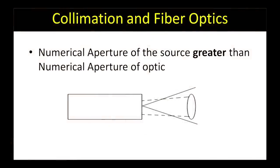If the numerical aperture of the source is greater than the numerical aperture of the optic, the optic is considered overfilled and not all of the light will be collected by the optic.